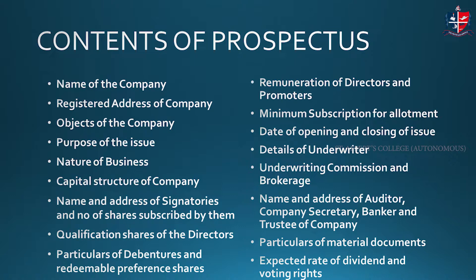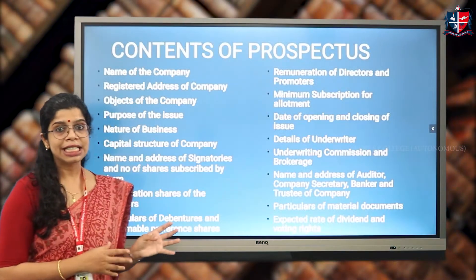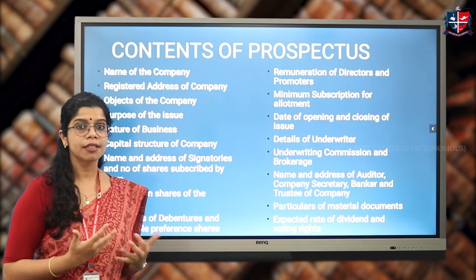Further contents include: qualification shares of the directors — the shares acquired by directors in order to remain in their position — particulars of debentures and redeemable preferences, remuneration of directors and promoters, minimum subscription for allotment, date of opening and closing of the issue, details of underwriters, underwriting commission and brokerage, name and address of auditor, company secretary, banker, trustee of the company, particulars of material documents, and expected rate of dividend and voting rights.